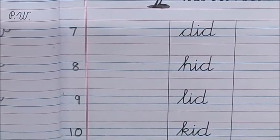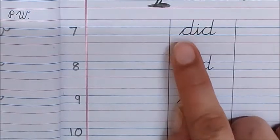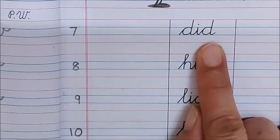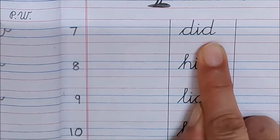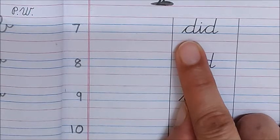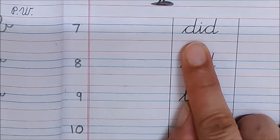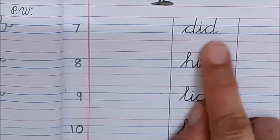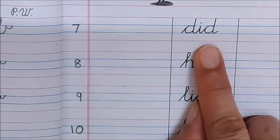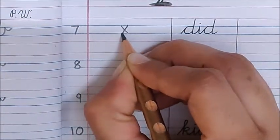Now, let us read all these words. D-i-d. Did. D-i-d. Did. Did means kuch kia tha. Like, I did reading today. I did my homework. Matlab, mainne aaj reading kari thi. Aur mainne apna homework kara tha. So, did means kia tha. You use it in sentences. So, for did word, we will put a cross. No drawing for this word.